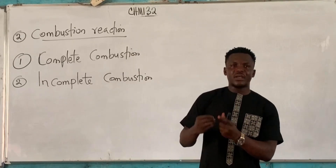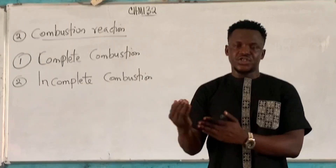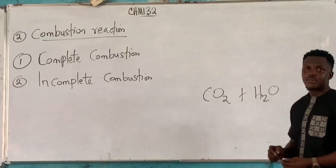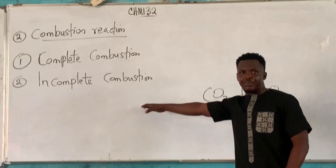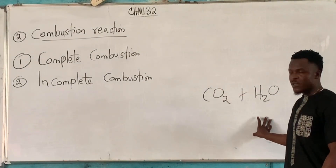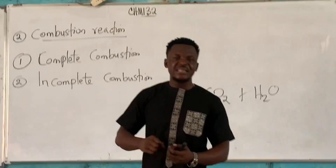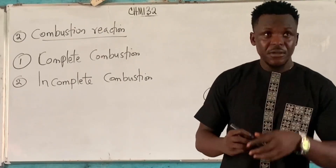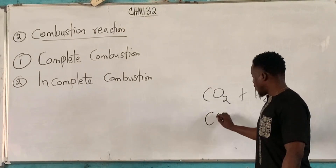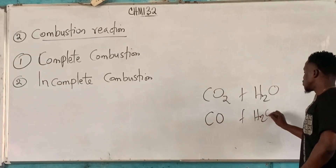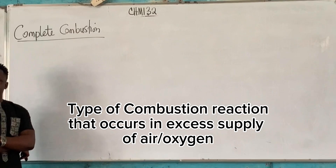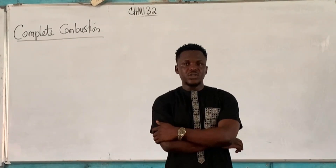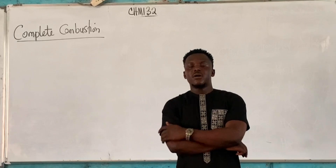Complete combustion is a case where an alkane reacts with an excess supply of air or oxygen. When the air is in excess, there is enough oxygen to combust all the carbon, and the products of complete combustion are always CO2 and water.